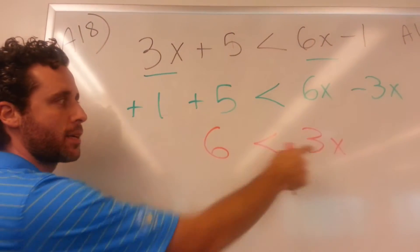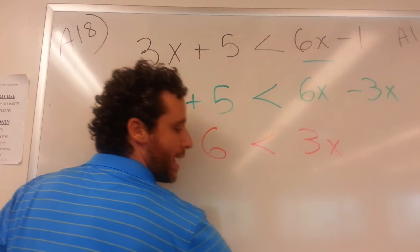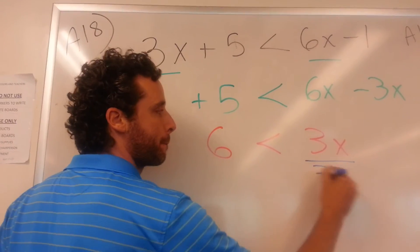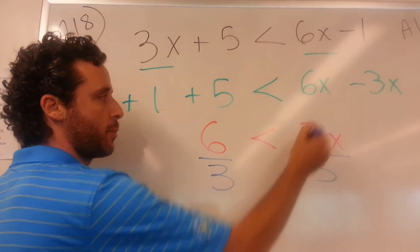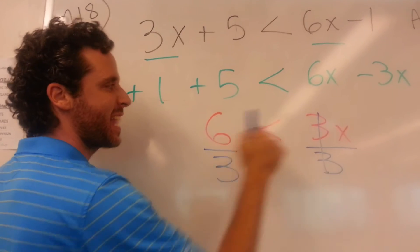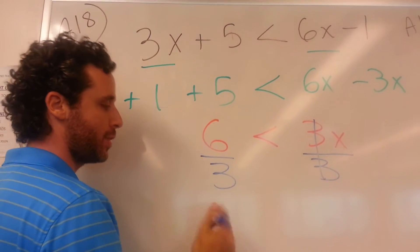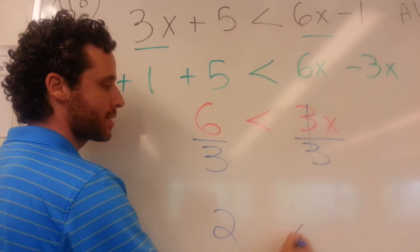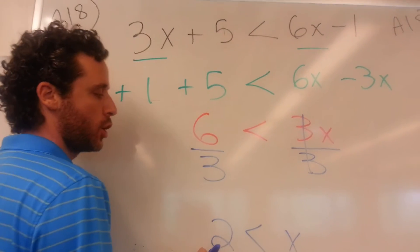And we're almost done, except we need to get x by itself. So our last step is to divide by three from both sides, so that we can have x by itself. And x now is greater than six over three. Six over three is going to turn into a two. So x is greater than two.